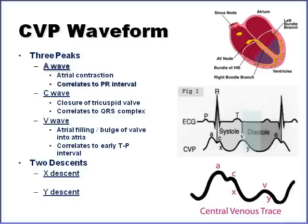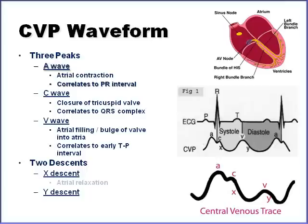Why do we care? Because if you look at the waveform, you see a whole bunch of little squiggles. The importance of interpreting the CVP waveform is that we're finding the A wave and taking the mean of the A wave. You wouldn't want to take the mean of the V wave or C wave because that wouldn't be the accurate reading. The X descent represents atrial relaxation, and the Y descent is the tricuspid valve reopening.